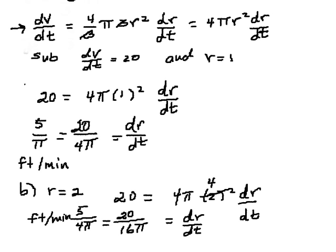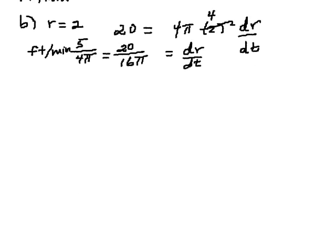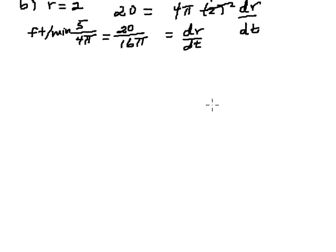So let's just compare. When r is equal to 1, we had dr/dt was equal to 5/π feet per minute. And when r is equal to 2...